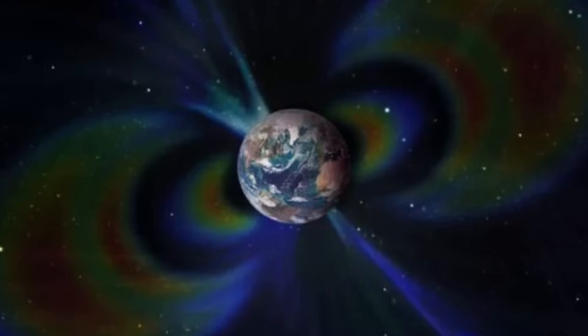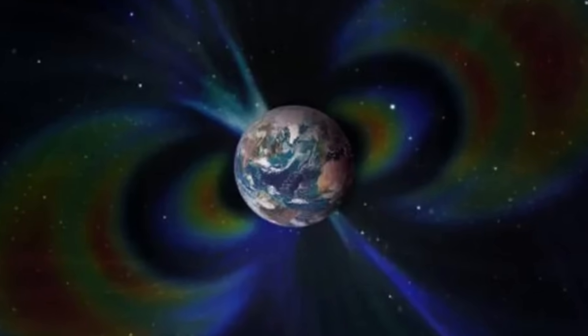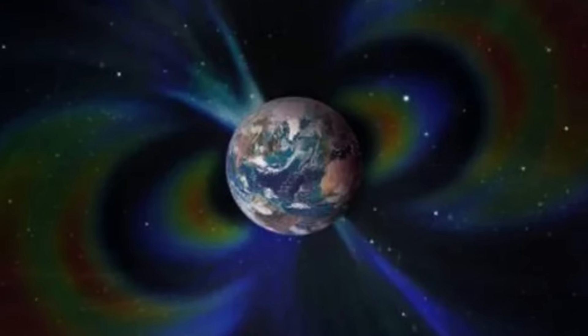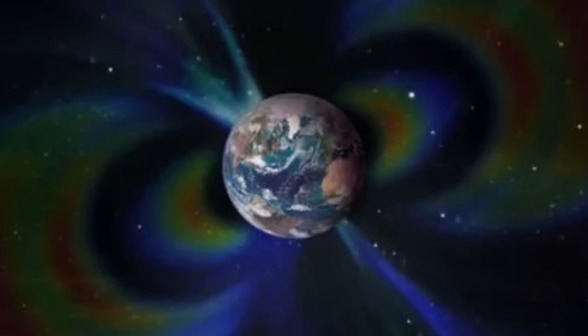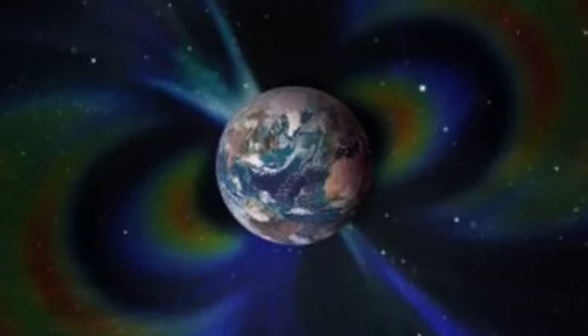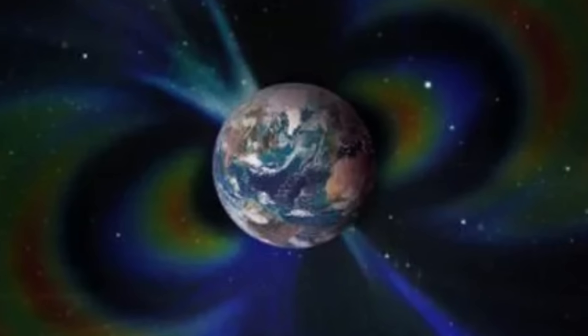Eventually leading to field instability, and consequently, the reversal of the poles. Currently, the magnetic North Pole is moving towards the northwest at an accelerated pace, from 16 km per year in the 1990s to 55 km per year today.